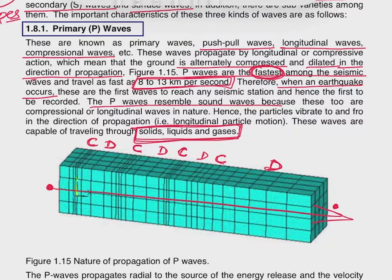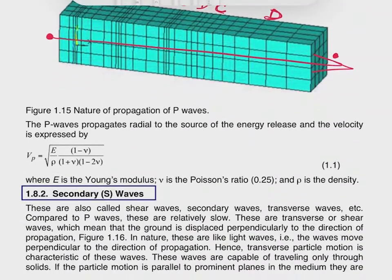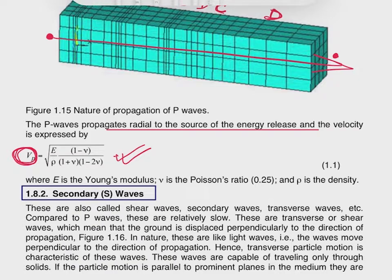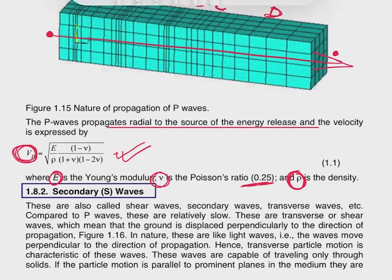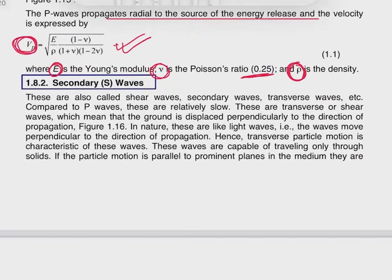P-waves propagate radially from the surface of energy release. The velocity of a P-wave is calculated by the formula: Vp = √(E/ρ × (1−ν)/((1+ν)(1−2ν))), where E is Young's modulus of elasticity, ν (nu) is Poisson's ratio, generally equal to 0.25, and ρ (rho) is the density of the material.